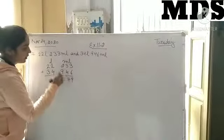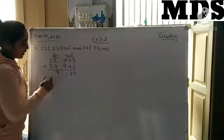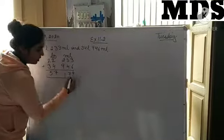9 plus 2 is 11. Here is the one carry. 4 plus 2 is 6 and 1 is 7, and 3 plus 2 is 5. This is our answer.